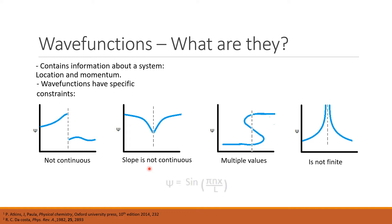An example of a viable wave function is the sine function. A sine function will start at zero, go up, come back down, go back to zero, and it will satisfy all four of these constraints. This wave function is what we will be using throughout the video.